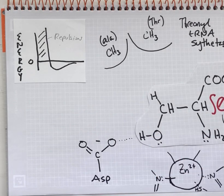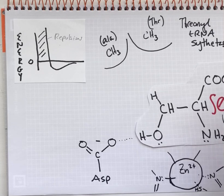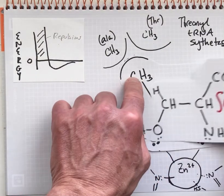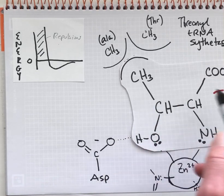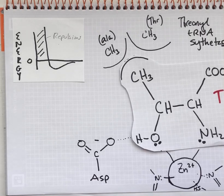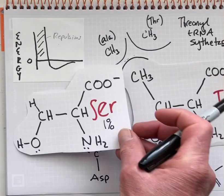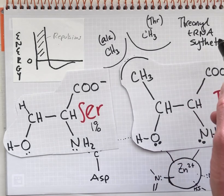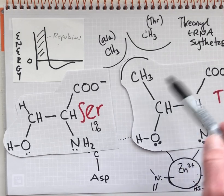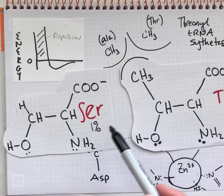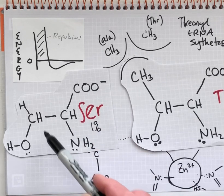This 1% misincorporation is too high an error frequency for protein synthesis. So the synthetase also has a second active site called the editing site, and it will hydrolyze the ester linkage connecting serine to the tRNA that's supposed to decode threonine codons. Threonine, different from serine because it has an extra methyl group, is too large to fit into that editing site. So threonine gets activated onto the tRNA that decodes threonine codons and will not enter the editing site because of its extra size from this methyl group.